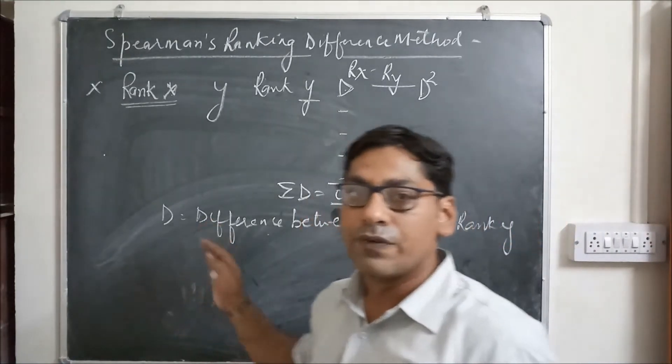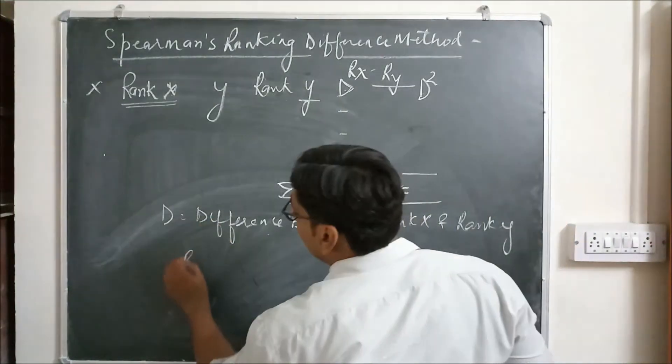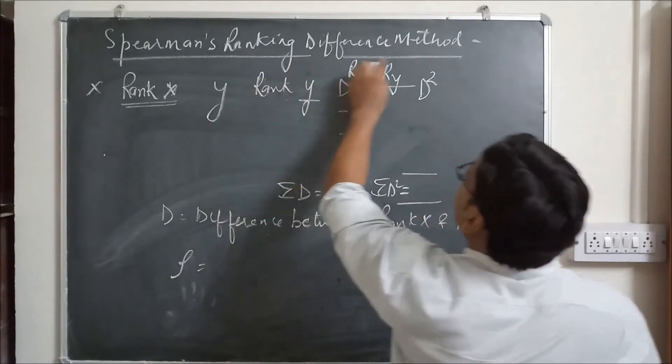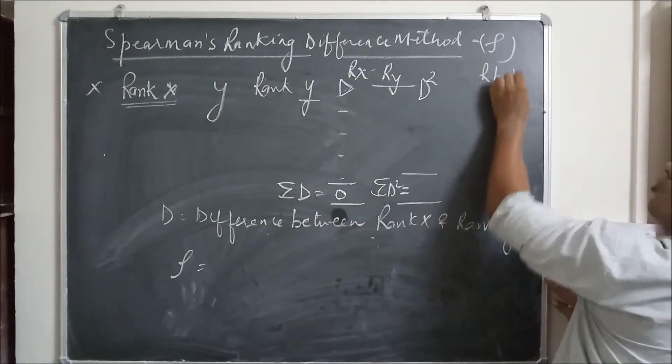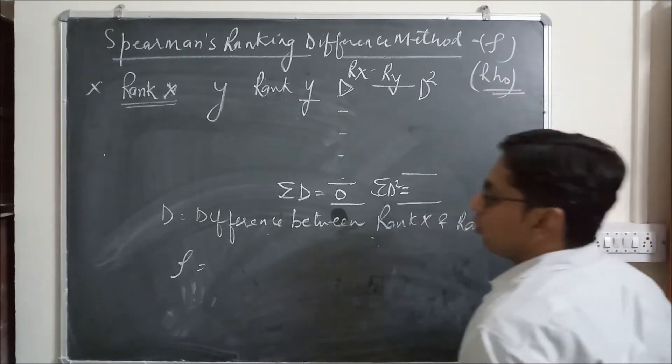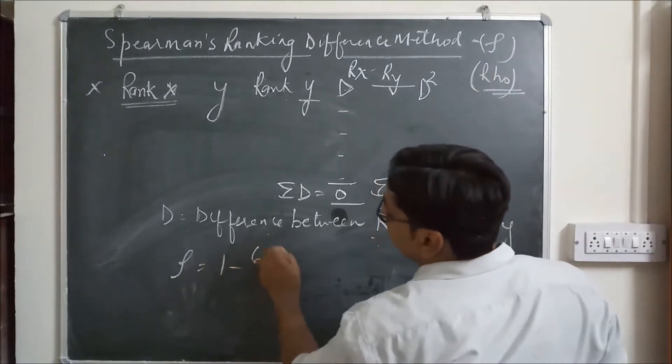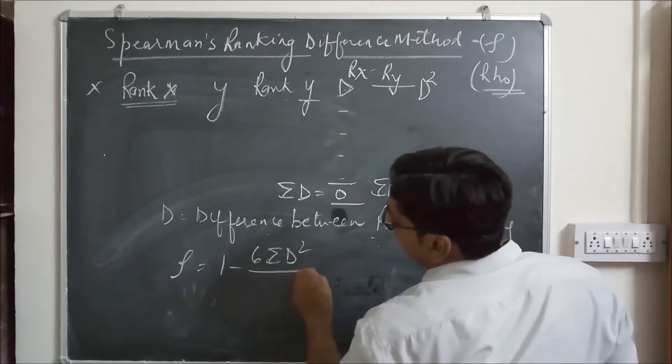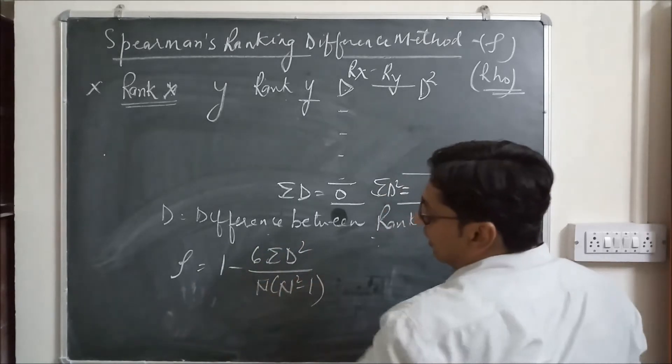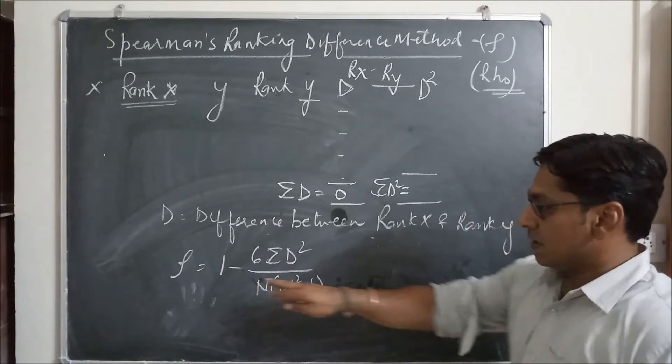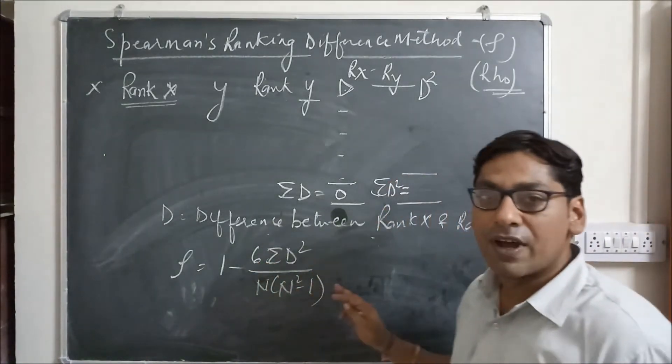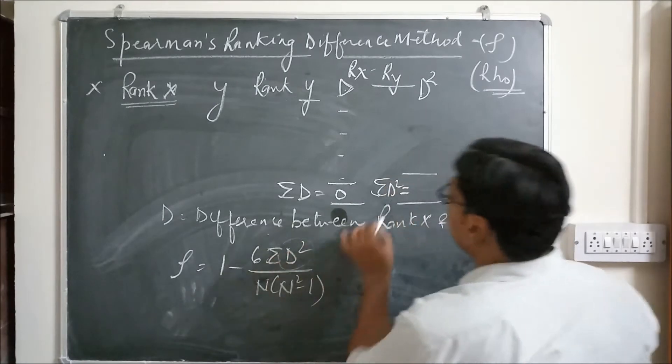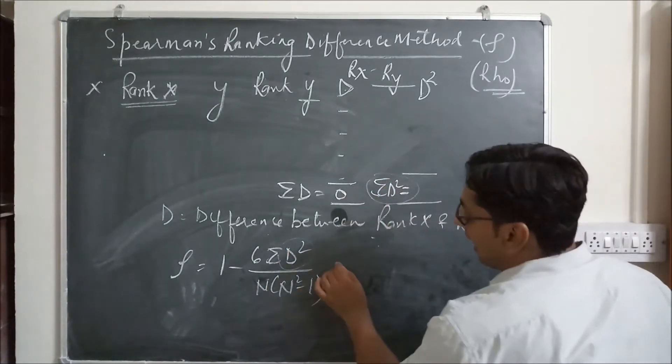Now for the calculation of coefficient, we have to use formula rho. Spearman ranking difference method is denoted by rho. Rho equals to 1 minus 6 sigma D square upon N, N square minus 1.